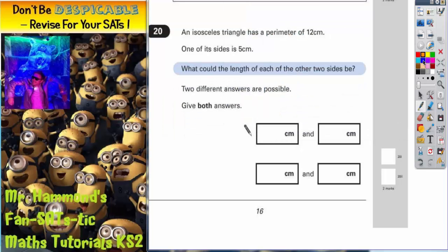Question 20. An isosceles triangle has a perimeter of 12 centimeters. One of its sides is 5 centimeters, and it does say one of its sides. What could the length of each of the other two sides be? Two different answers are possible. Give both answers.